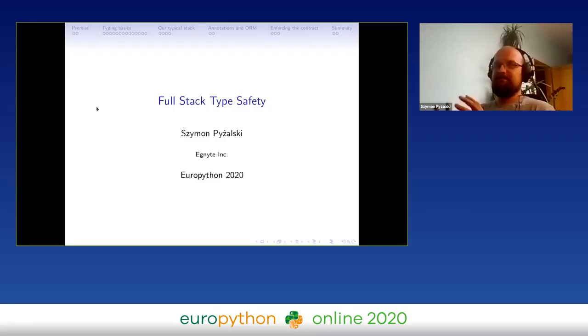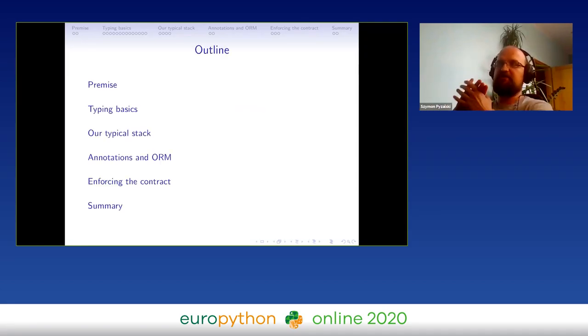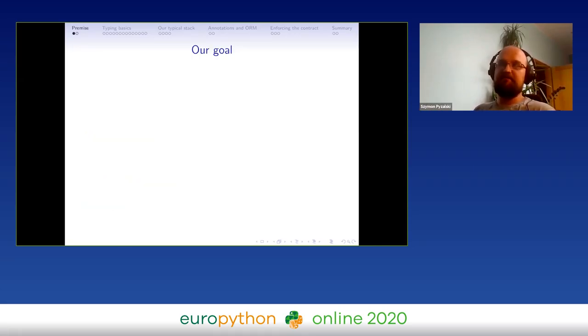Thank you. What I would like to talk about - let's first define what I mean by type safety and also what I mean by full stack type safety. The type safety that we want to achieve is catching all the errors, all the bugs that are caused by type mismatches as soon as possible, ideally during code development but never later than in CI.